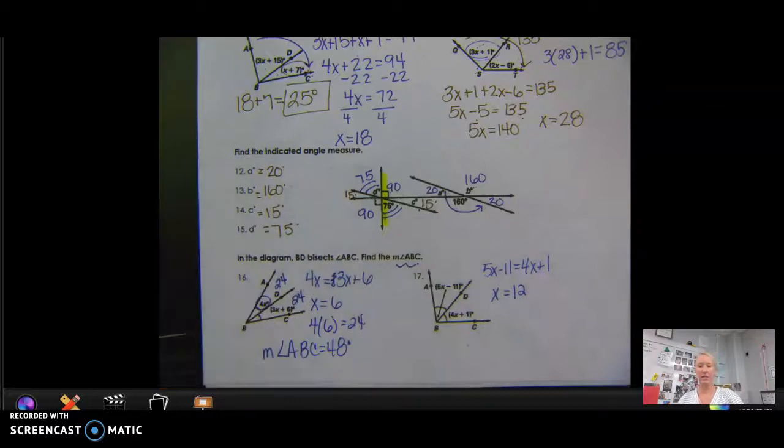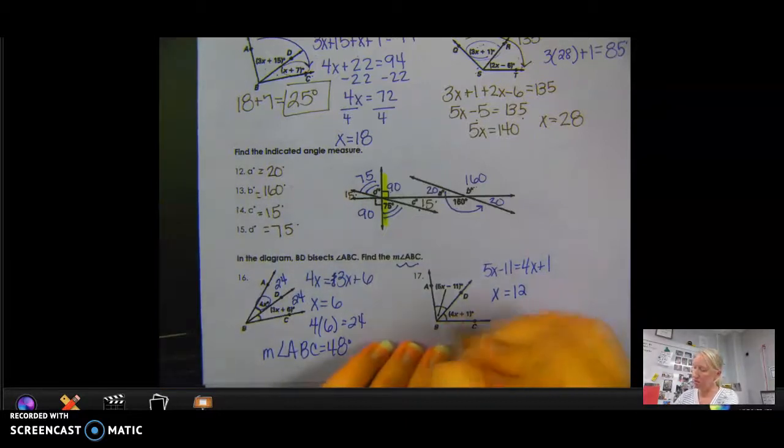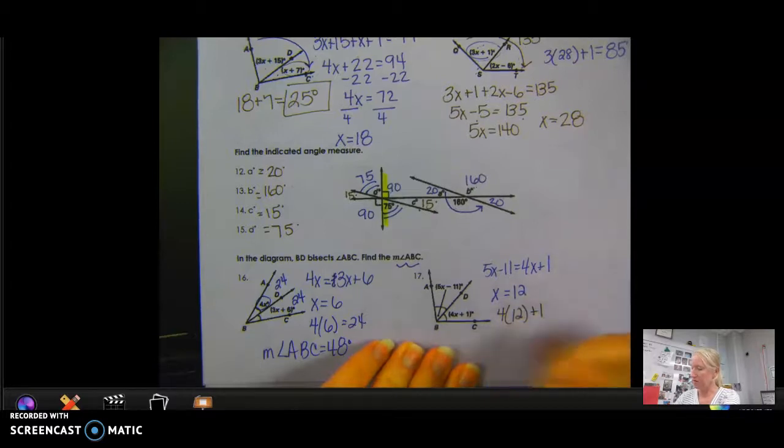I'm going to add 11 and I get x equals 12. So then I'm going to plug it into one of the two. It doesn't matter. I'm just going to go ahead and do it to this one. So I'm going to do 4 times 12 plus 1. 4 times 12 is 48.